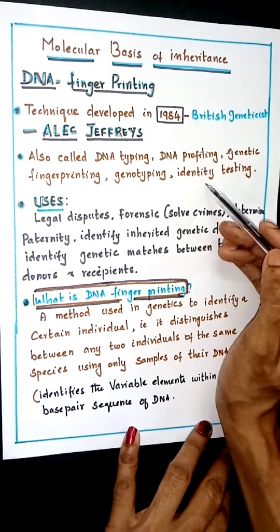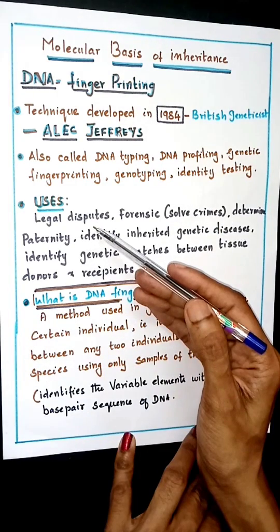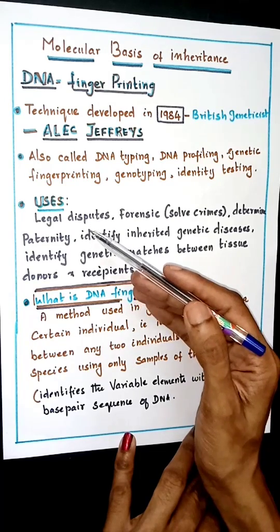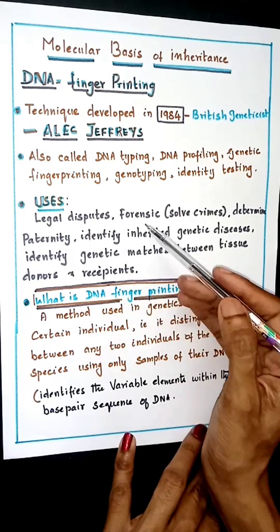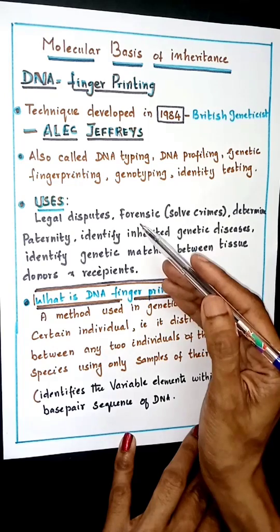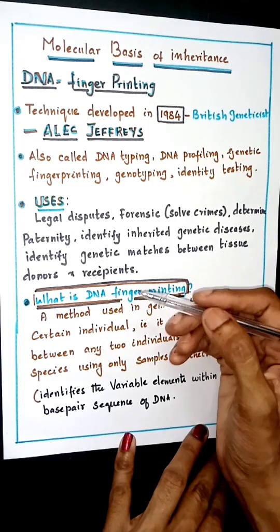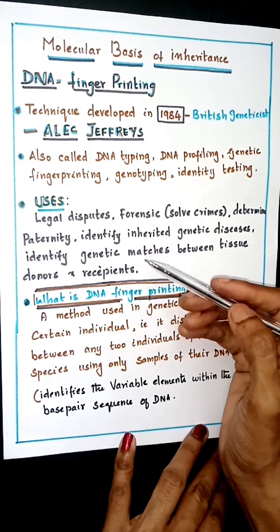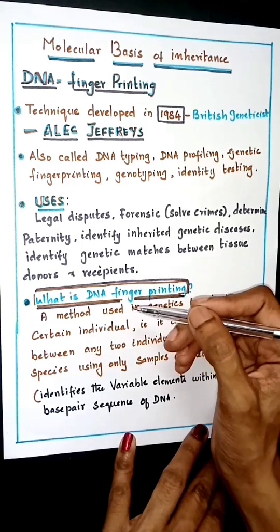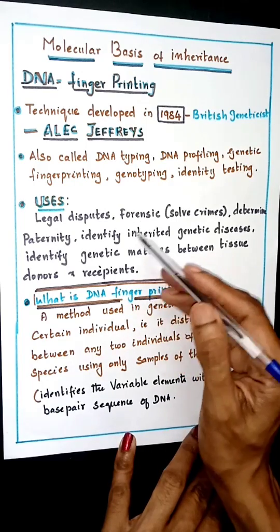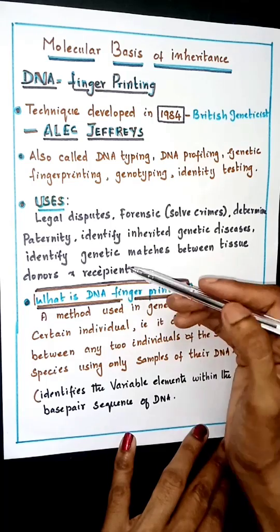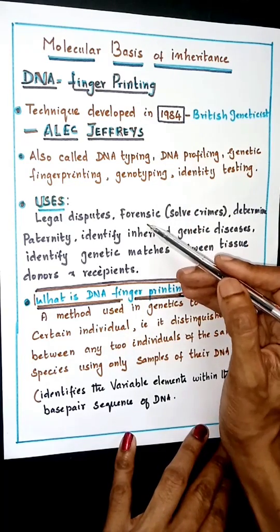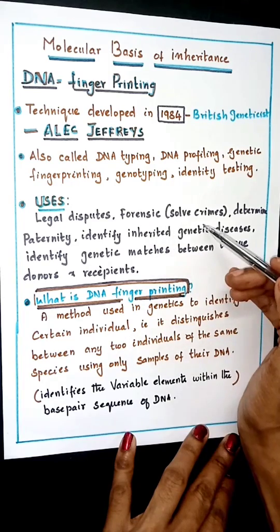In legal disputes, DNA fingerprinting is helpful in solving court cases and forensic investigations — that is, solving crimes. As seen in cinema, investigators collect hair, blood samples, and tissue from objects like knives, perform lab work, and identify the criminal using this technique.